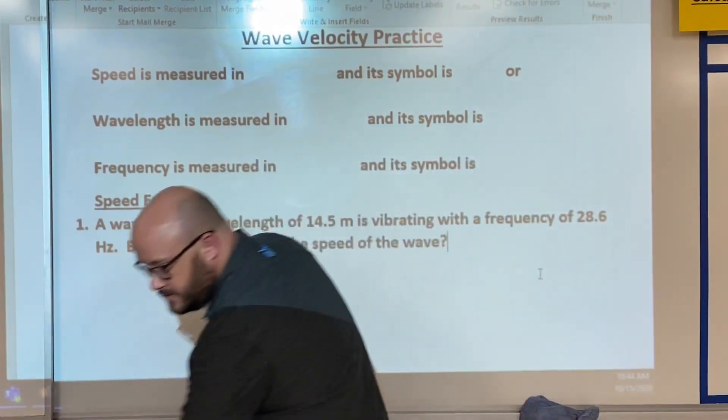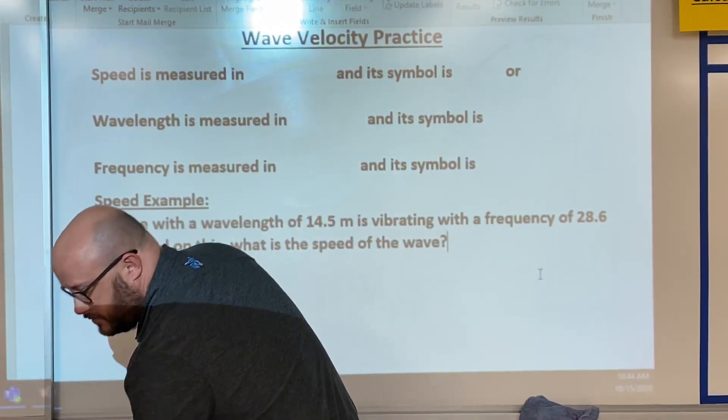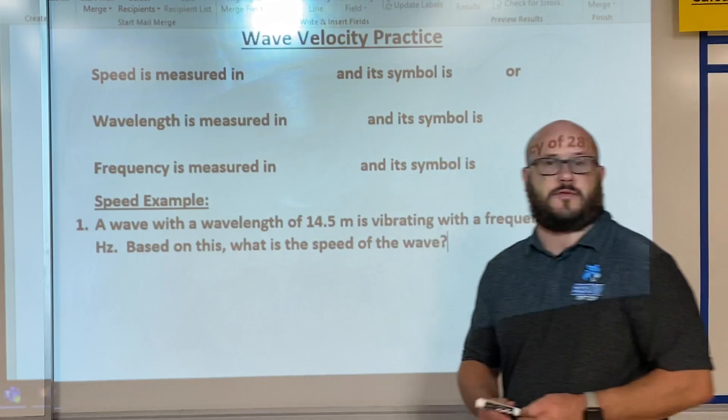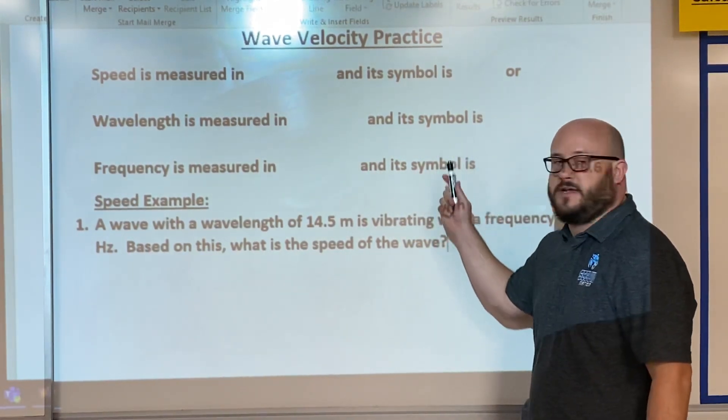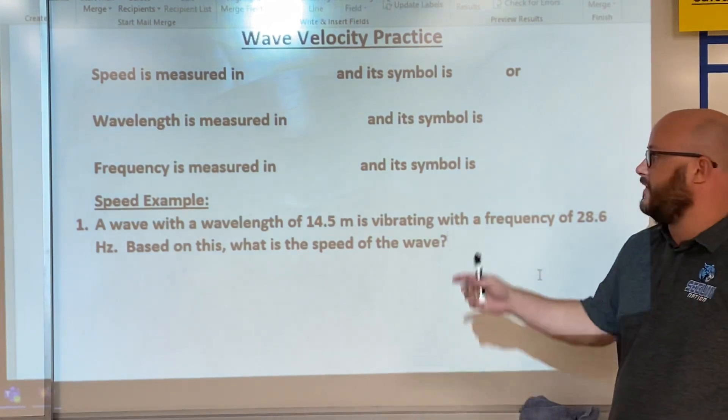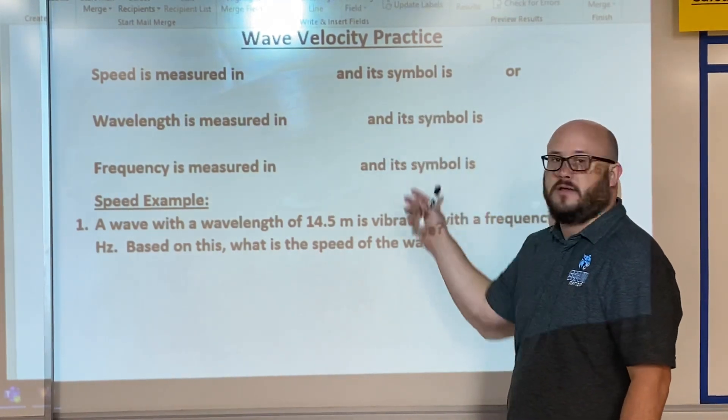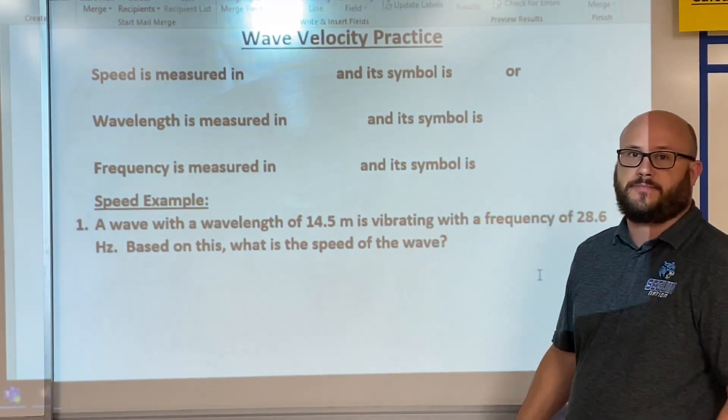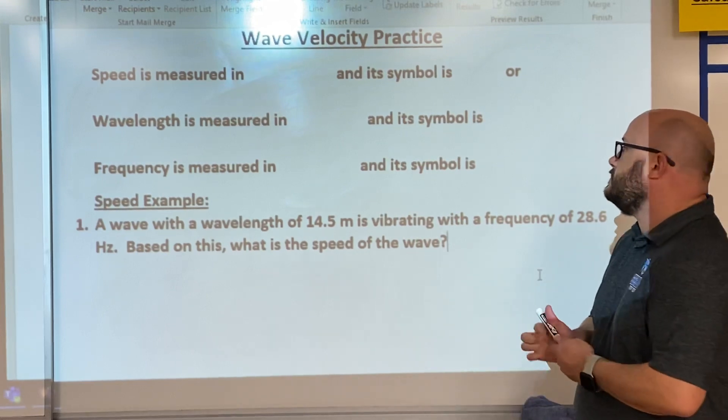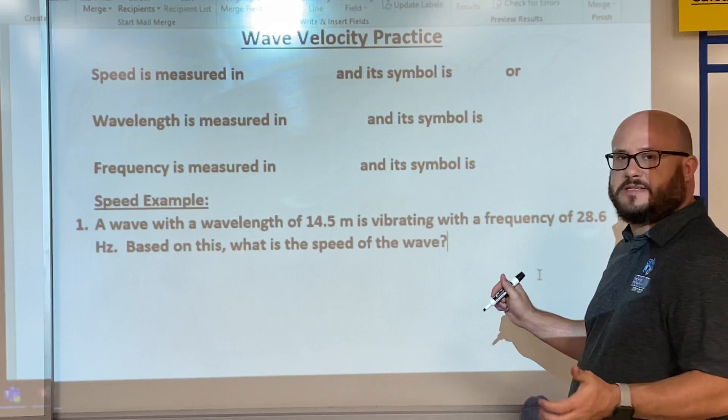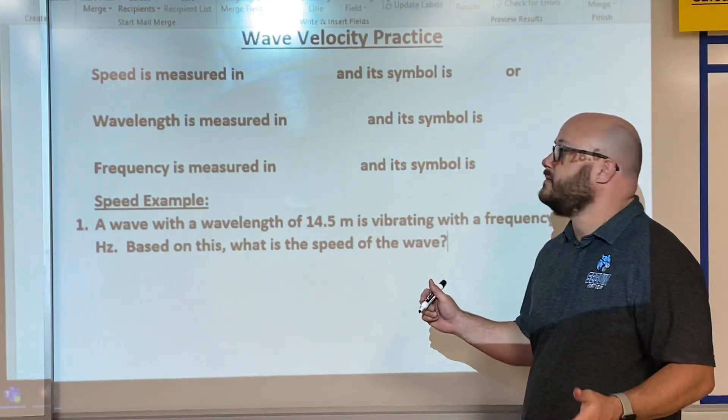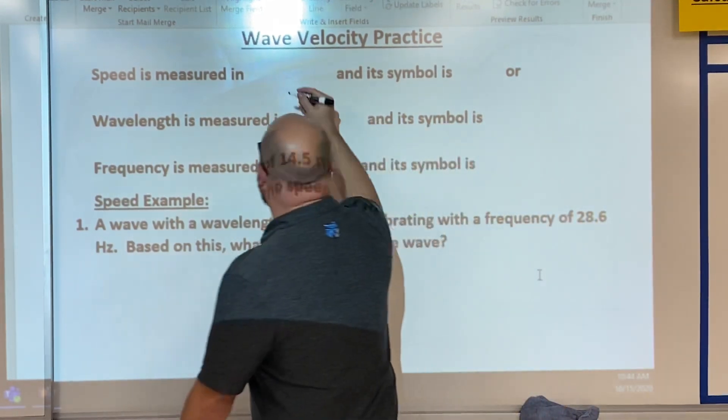Hey class, today I'm going to show you the simple formula for calculating a wave's speed given its frequency and wavelength, or you can find the wavelength or frequency given the other two variables. First up, let's see what speed actually is. Speed is how fast the wave is traveling, so what we're going to measure that in is meters.